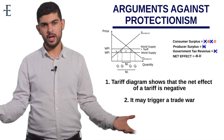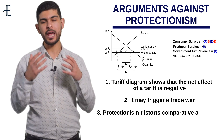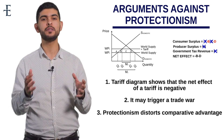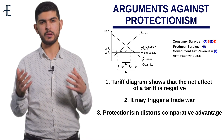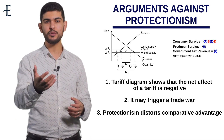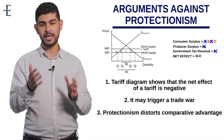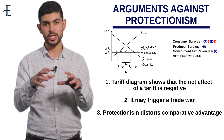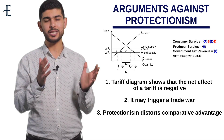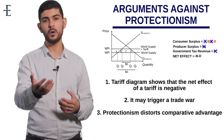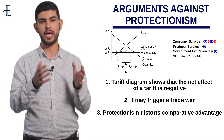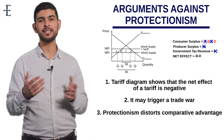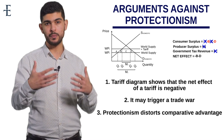Number three: by imposing any form of protectionism, you distort comparative advantage, which is a key concept in theme four. One of the key assumptions for comparative advantage to operate is that there is free trade between countries. The moment you impose protectionist policies, that distorts comparative advantage, resulting in an inefficient allocation of global resources — everyone is worse off and living standards as a whole decline.